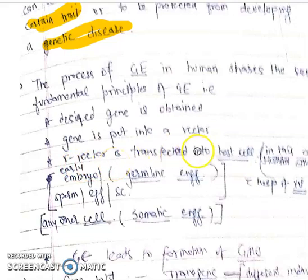The transgene or desired gene is put into a vector and this recombinant vector is put into the host cell. That process is known as transfection in animals. When this recombinant vector is put into a germ cell - a sperm, ova, or an early embryo, or even a stem cell - it is known as germline engineering and is done with the help of viral vectors.